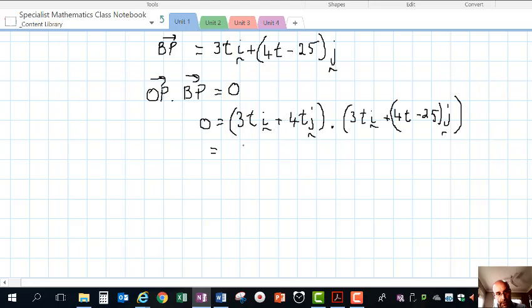Applying the dot product—remember it's corresponding parts or elements. We have 3t times 3t for the i's, which is 9t². For the j's, we've got 4t times (4t - 25). Let me write it out properly. It's equal to zero, and remember it's a scalar product, so the answer is a scalar. The i's and j's have dropped out.